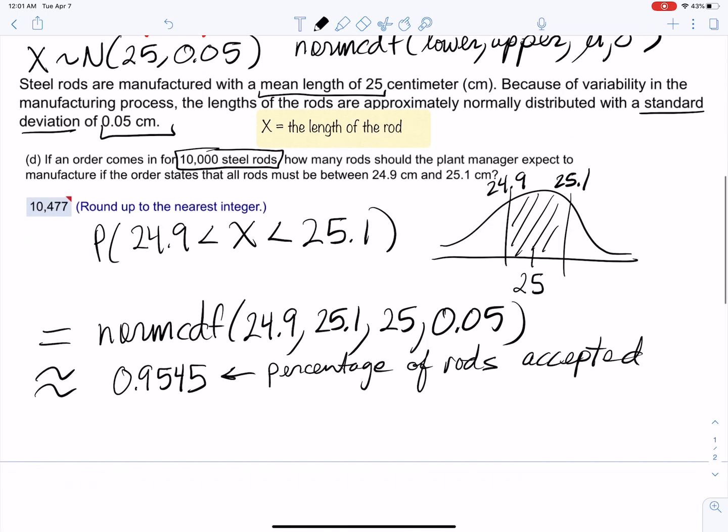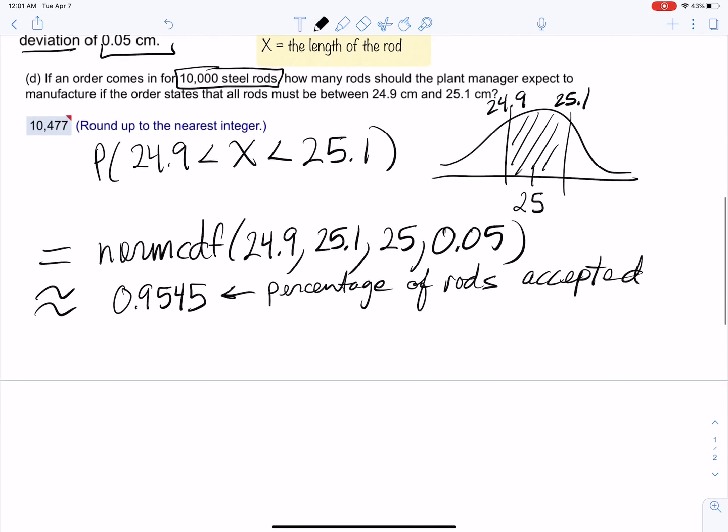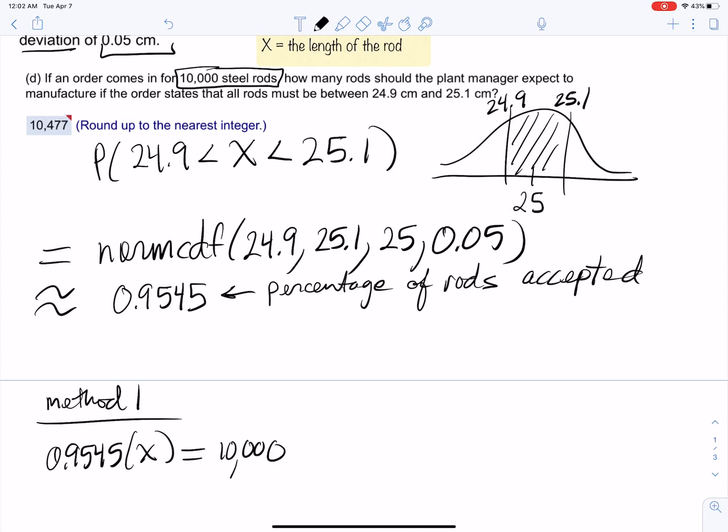That's a percentage question. There are a couple methods. One way to think about it: 0.9545 times some value equals 10,000. Or you can do part over whole - Method 2: part over whole equals percentage over 100.